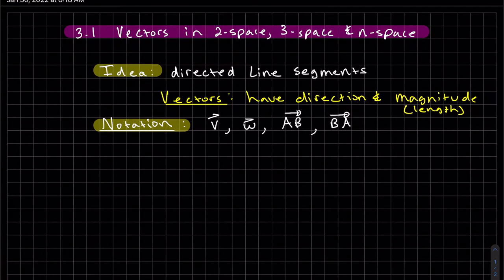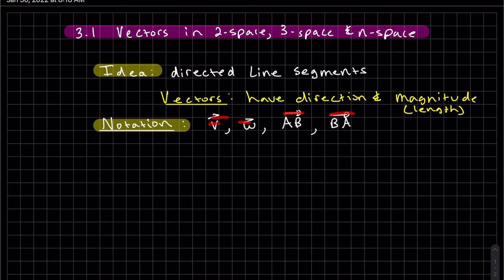Our notation, I put a little arrow on top. In the book, it might be bold. AB versus BA. When you have the endpoints A and B, you can write it like so, so you can see that it's going from A to B or from B to A. These would be opposite directions.